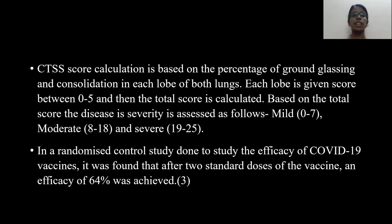CTSS score calculation is based on the percentage of ground-glass opacity and consolidation in each lobe of both lungs. Each lobe is given a score between 0 to 5, and then the total score is calculated. Based on the total score, disease severity is assessed as follows: mild disease is given a score less than 7, moderate disease between 8 to 18, and severe disease between 19 to 25. In a randomized control trial done to study the efficacy of COVID-19 vaccines, it was found that after two standard doses of the vaccine, an efficacy of 64% was achieved.